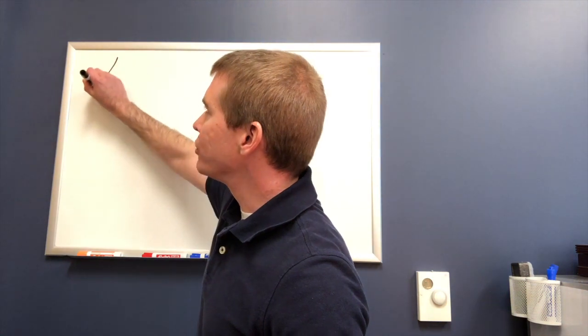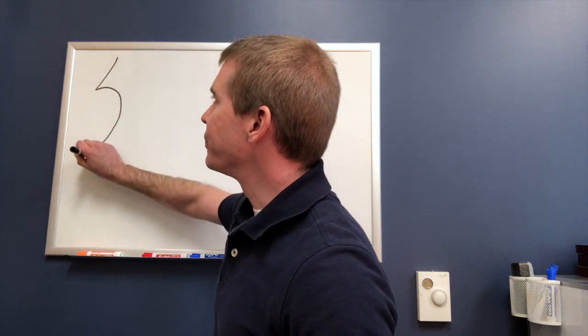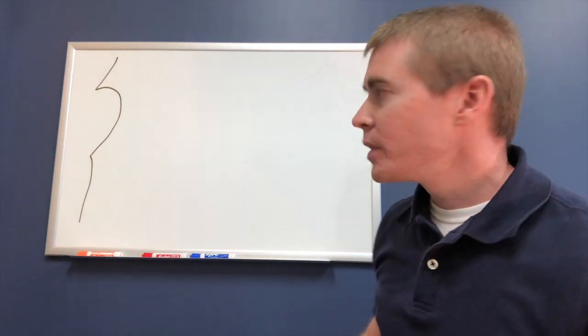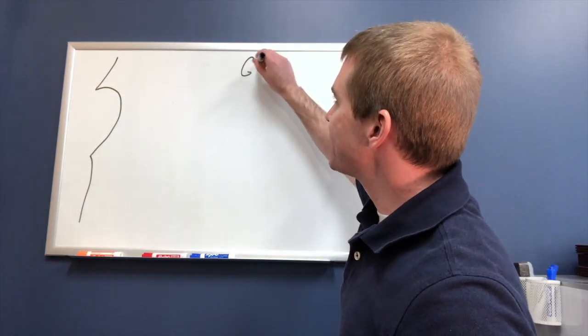First, let's draw out the brain stem. We have the midbrain, the pons, and the medulla. Now let's do these GSAs.